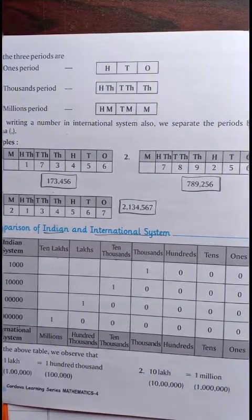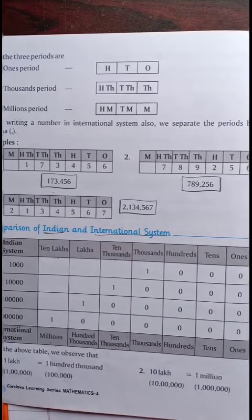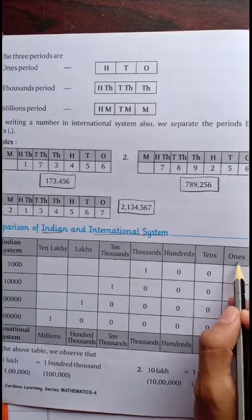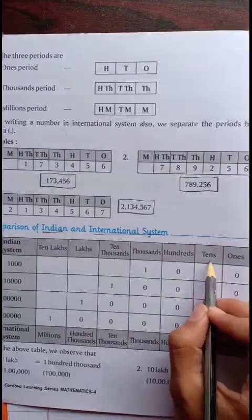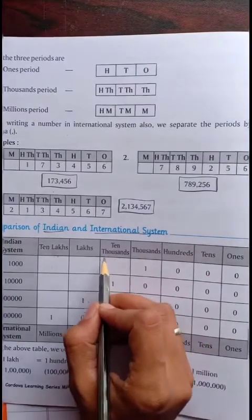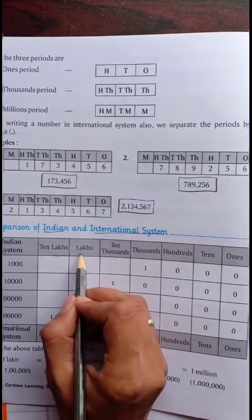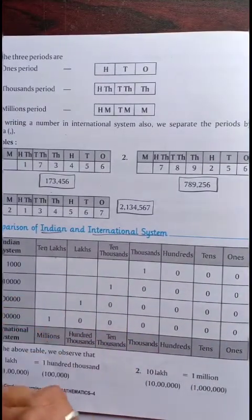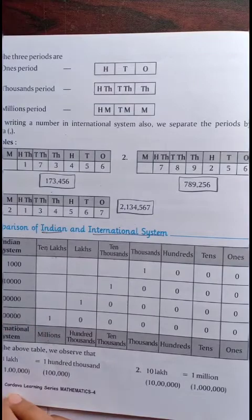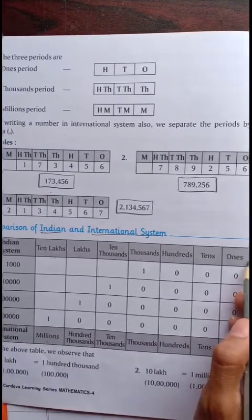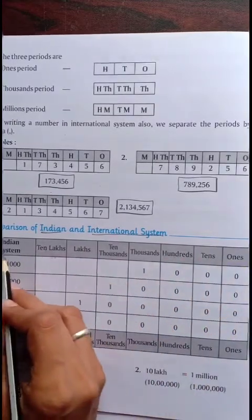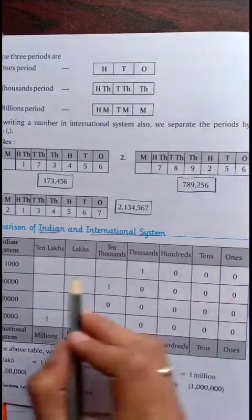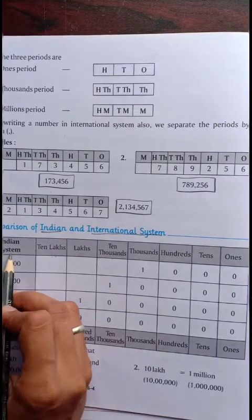Every digit or every number is placed at its own place. In the Indian system, the places are as follows: 1, 10, 100, 1000, 10,000, lakhs, 10 lakhs, crores, 1 crore and so on. We use this sequence of places in the Indian system.